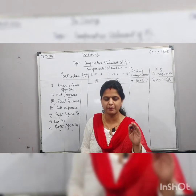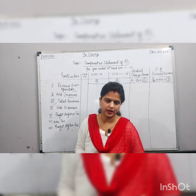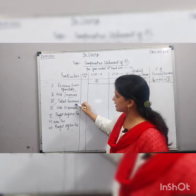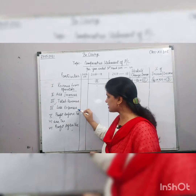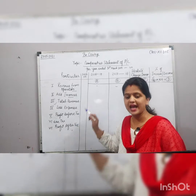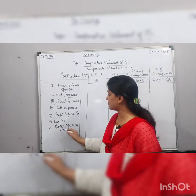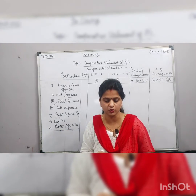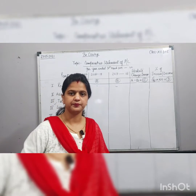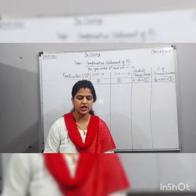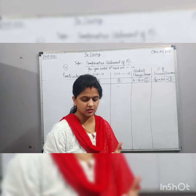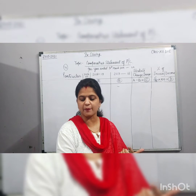When we do the practical question you will better understand how to implement this format. Now we move to Illustration Number 4. From the given information, we have to prepare a comparative statement of profit and loss. Revenue from operations, other incomes, expenses, and income tax are all given in the question.